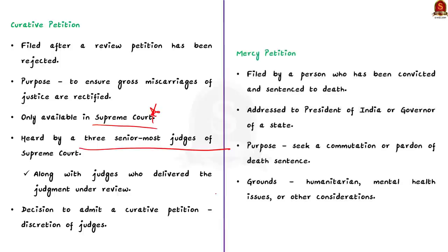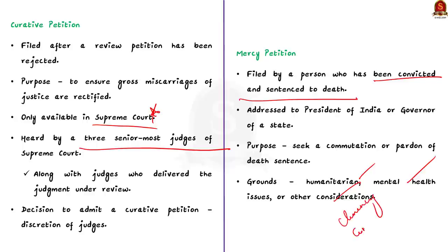A curative petition is usually heard by the three senior-most judges of the Supreme Court along with the judges who delivered the judgment under review. The decision to admit a curative petition is at the discretion of the judges. A mercy petition is filed by a person convicted and sentenced to death, addressed to the President of India or the Governor of a state. Its purpose is to seek commutation or pardon of the death sentence, typically based on humanitarian grounds, mental health issues, or other considerations.